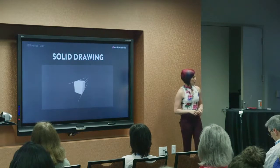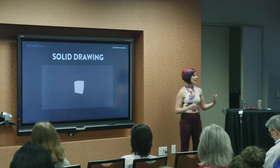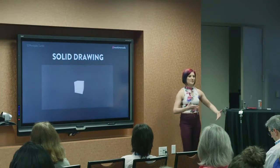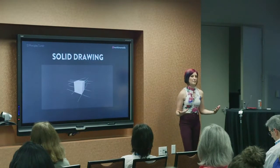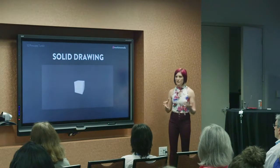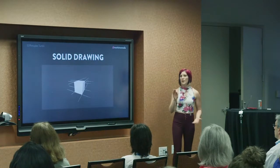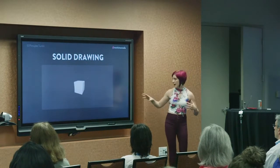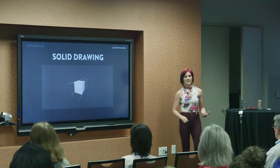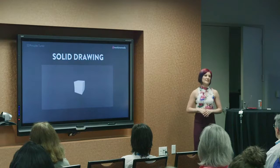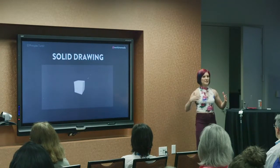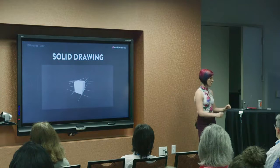The concept of solid drawing basically means that we believe an object can physically exist because it's following consistent principles of existing in space. Like it's not going through itself or contorting itself in some weird space-time continuum way. It is following the principles of solid drawing — it behaves consistently with itself, consistently with its environment, everything is following the same vanishing points. That's solid drawing.